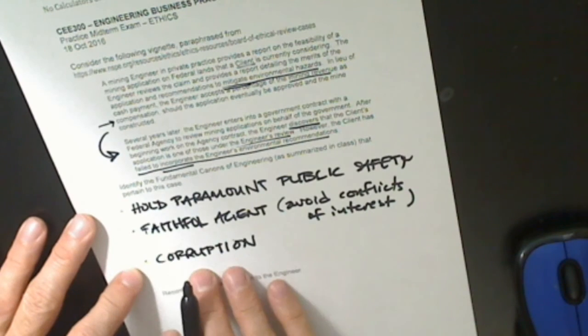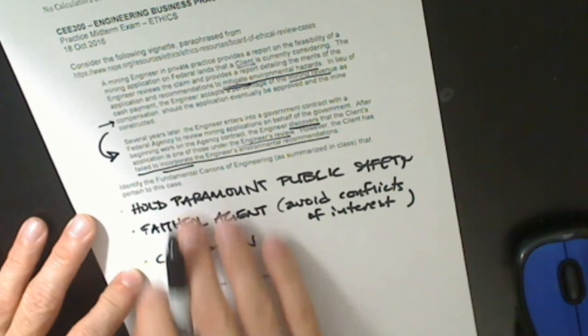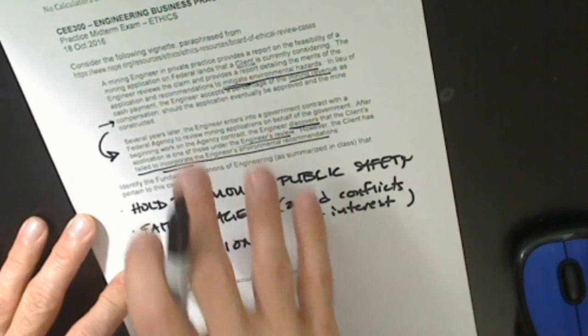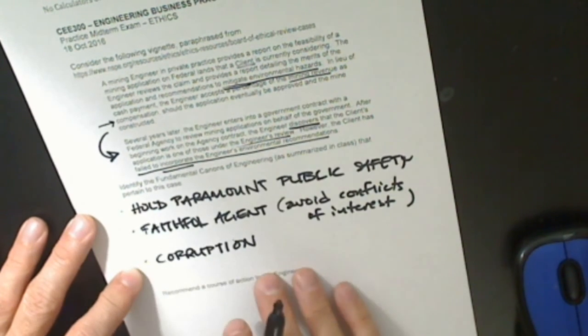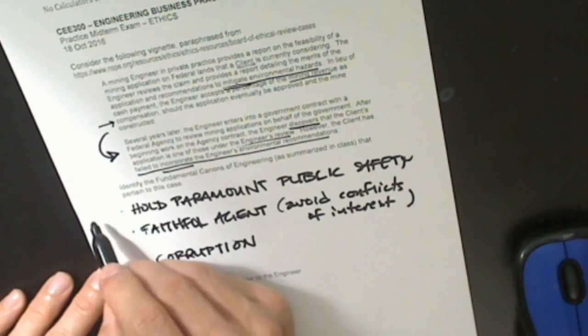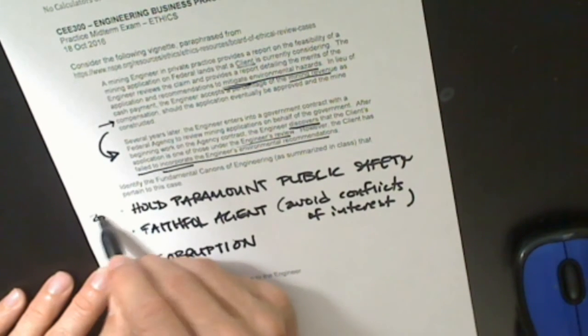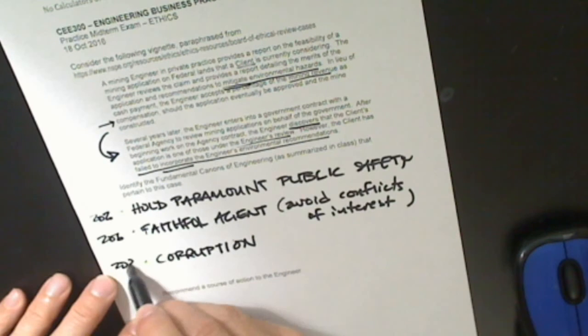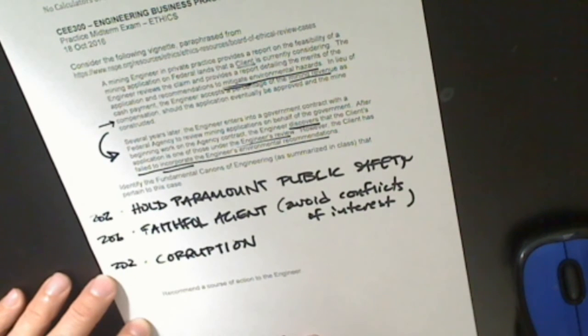So we've identified three fundamental canons that apply to the case that's been described. Each one of these is worth 20%.